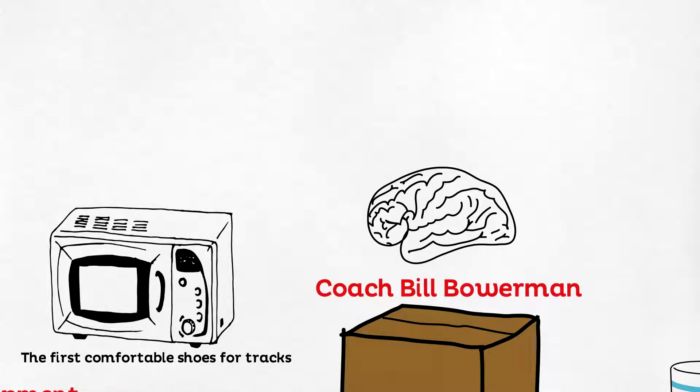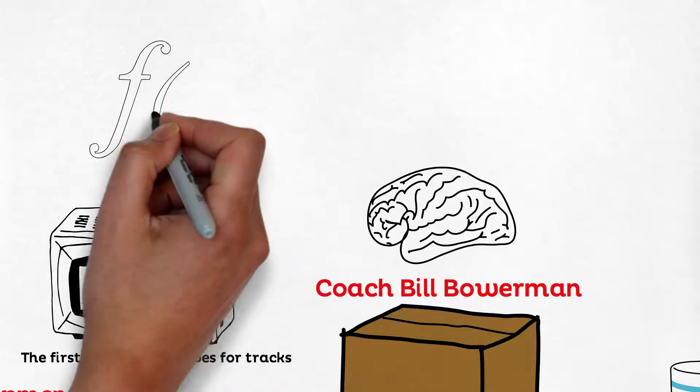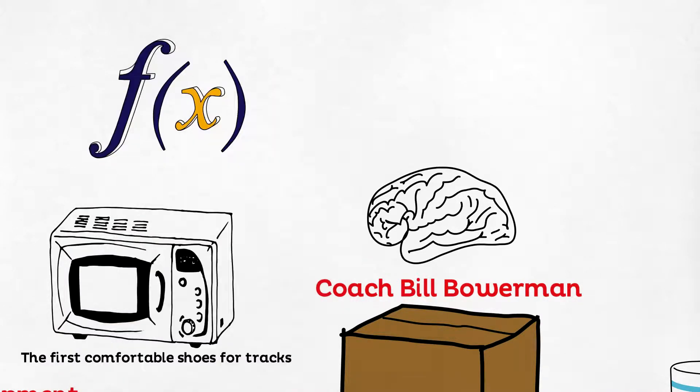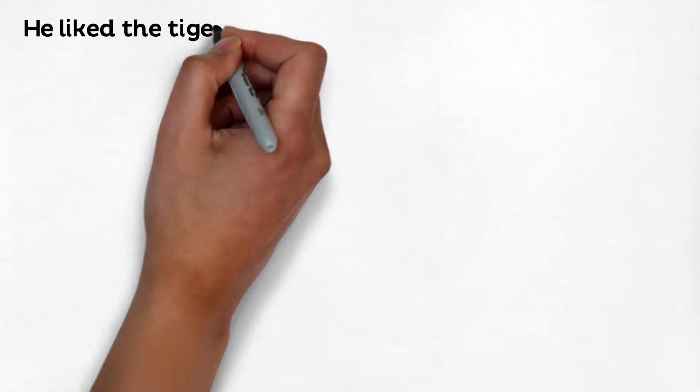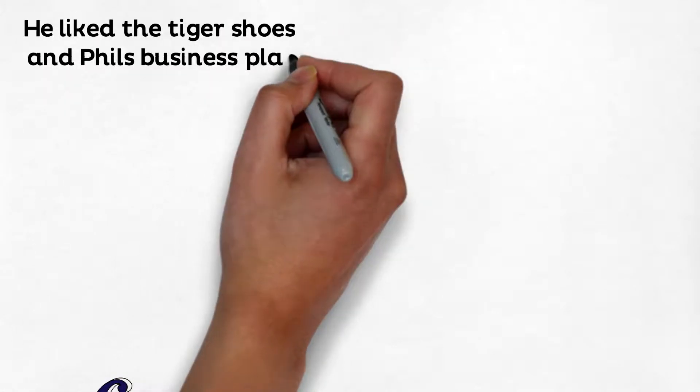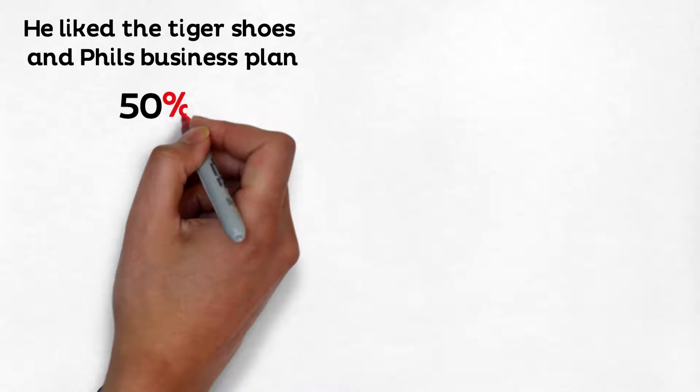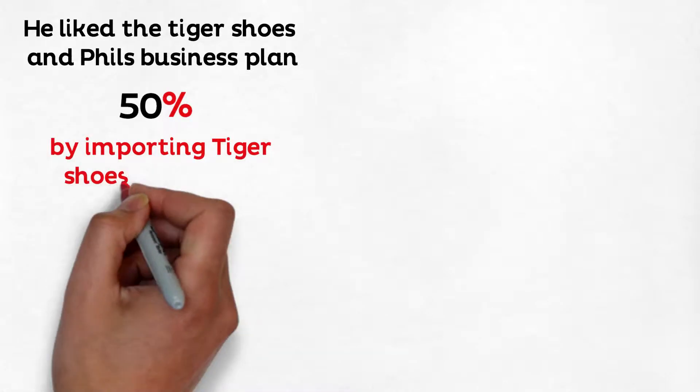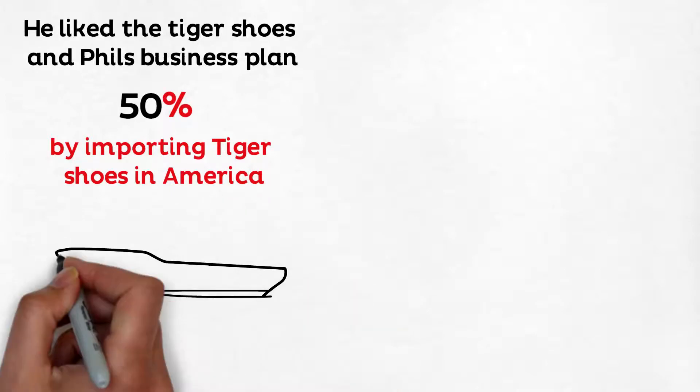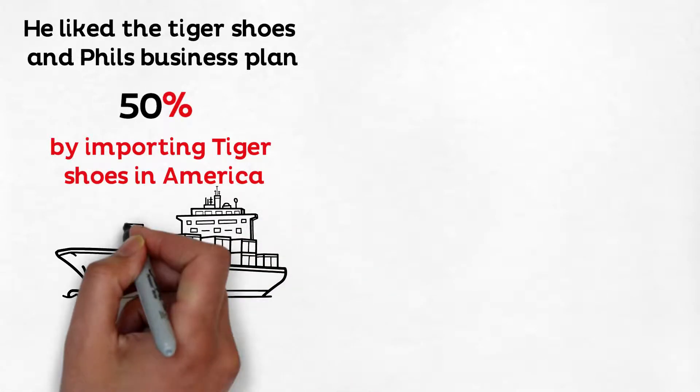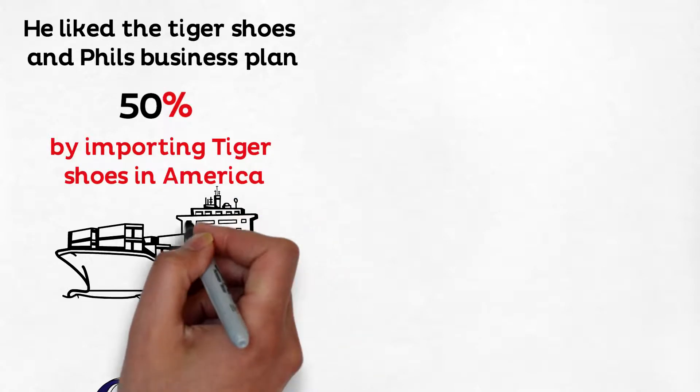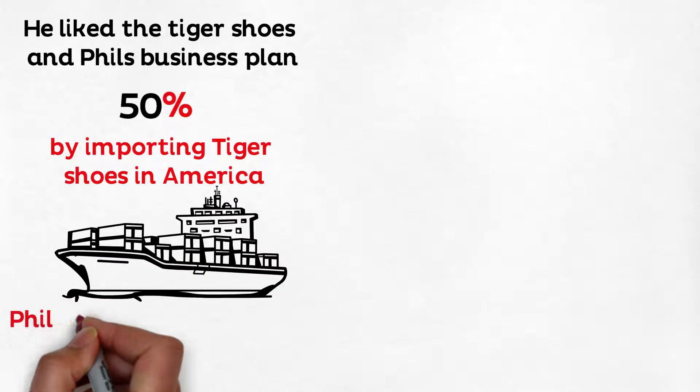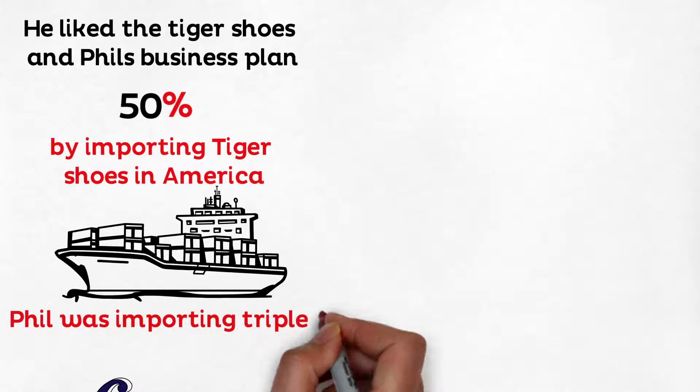Like Edison, he went through countless iterations to perfect the formula. Bowerman really liked the Tiger shoes and Phil's business plan and asked Phil if he could be a 50% partner in the Blue Ribbon business by importing Tiger shoes in America. With some financial family help, they got started on importing shoes. The shoes were extremely successful. The quantity that Phil was importing tripled and then quadrupled.